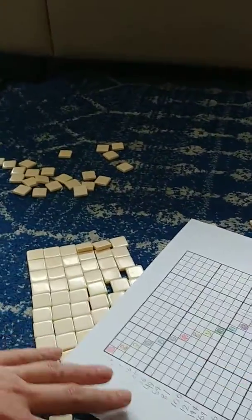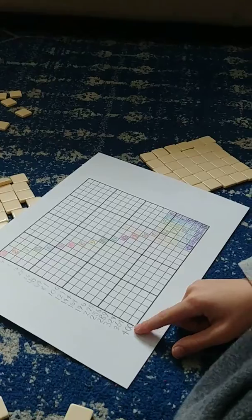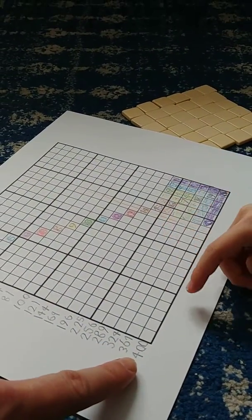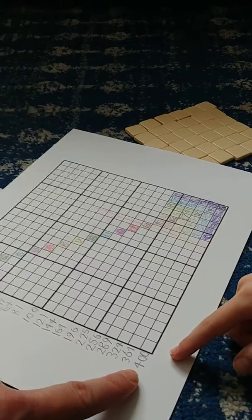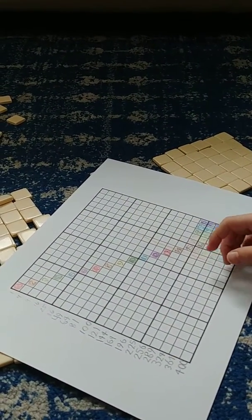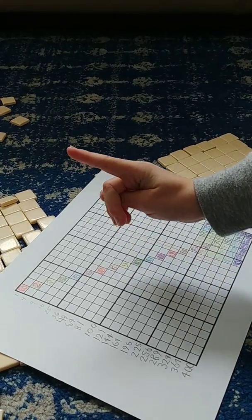And these are twenty-fives. I counted that right there. And I found out that this, which is forty... I mean, four hundred. Yep. And that means that sixteen twenty-fives is four hundred.